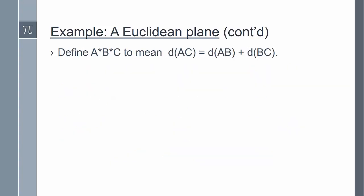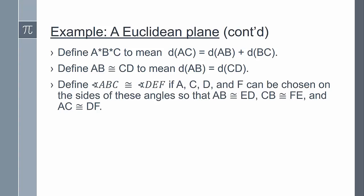To continue this example, we're going to define the notation B between A and C to mean that the distance from A to C is equal to the distance from A to B plus the distance from B to C. Then we can define congruent segments AB and CD to mean that the distance from A to B is equal to the distance from C to D.